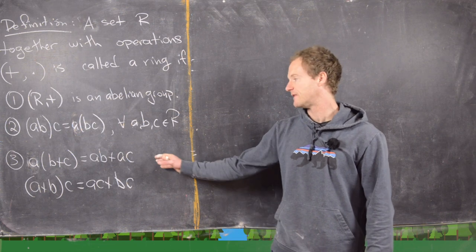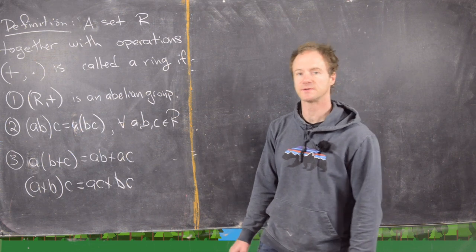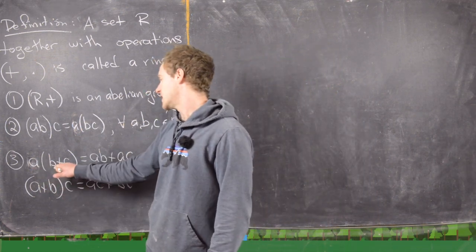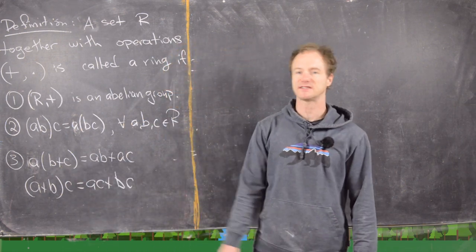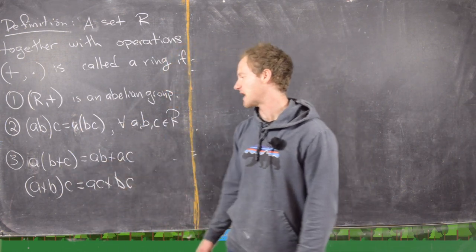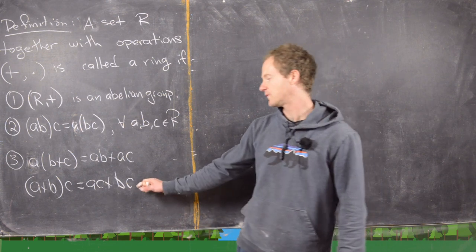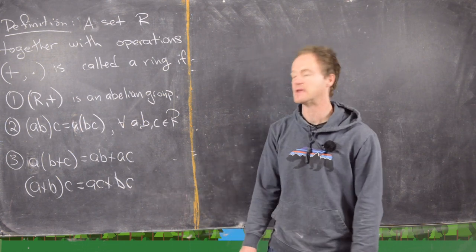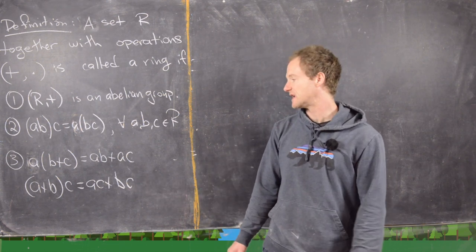And that's for all a, b, c in R. And then these two statements are also true for all a, b, and c in R, and these are distributive properties. So if we do a times the quantity b plus c, it's exactly what you would want it to be: ab plus ac. And then if we do it in this order, a plus b quantity times c, it's going to be ac plus bc.